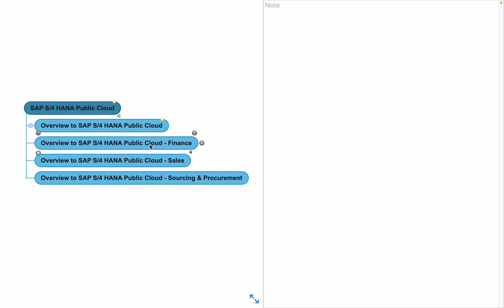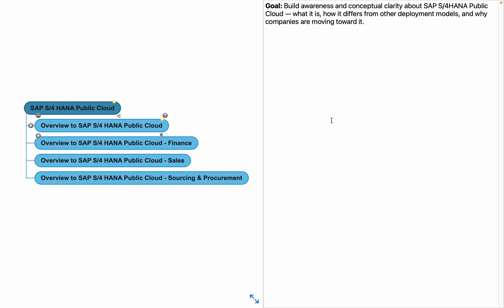So let's come to the topic. Today's topic is overview to SAP S4HANA public cloud. The goal of this video is to build awareness and conceptual clarity about SAP S4HANA public cloud — what exactly is public cloud, how it is different from other deployment models, and why companies are moving towards it. I think everybody is already aware that cloud is the future.